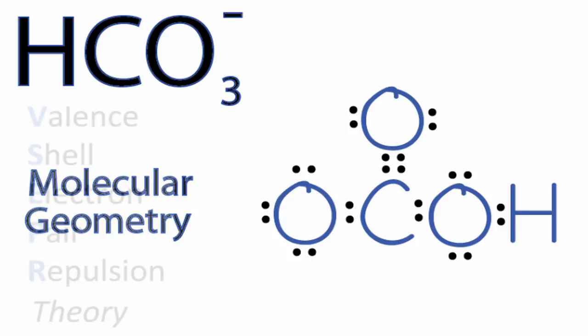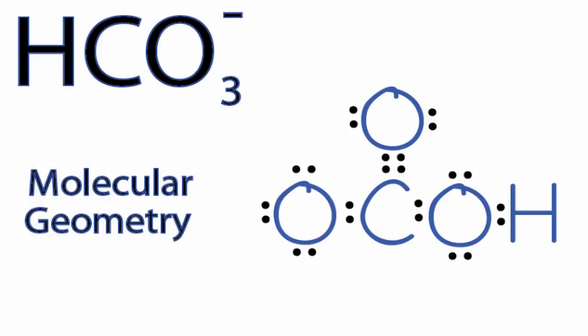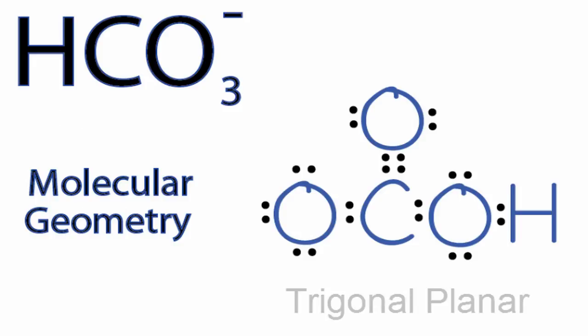And in accordance to valence shell electron pair repulsion theory, those three things are going to spread out as far away from each other as they can while still remaining bonding. And that's going to give us a trigonal planar geometry.